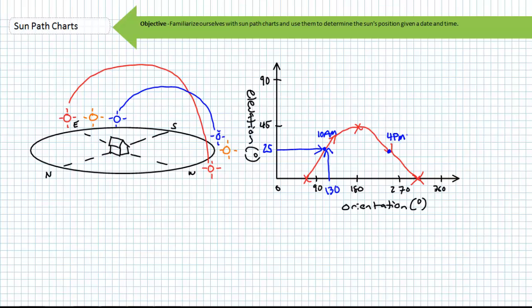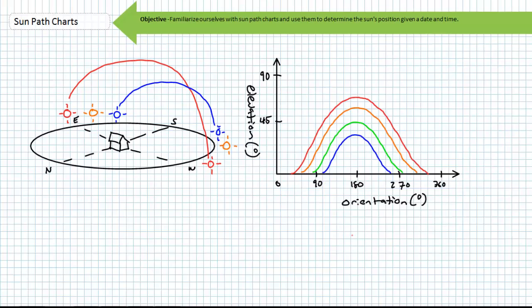Notice at both 10 a.m. and 4 p.m. the sun will be at 25 degree elevation. The only difference being that the sun at 10 a.m. will be in the eastern half of the sky and the sun at 4 p.m. will be in the western half of the sky at roughly 240 degrees orientation.